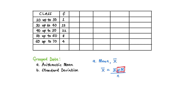To get fm, we already have f given to us in the question. Now we need to fill up m. The m stands for midpoint. Once we have the m, we can find fm — that is, the frequency multiplied by the midpoint. So, how do we find the midpoint?